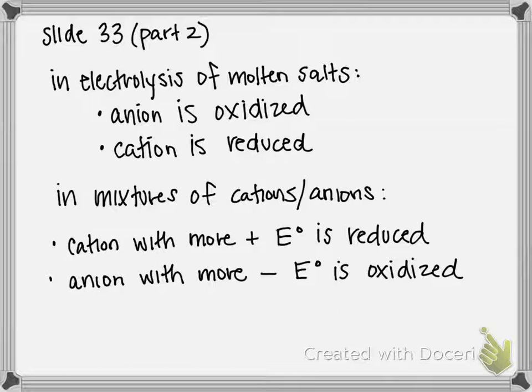Our question asks to predict the half-reaction occurring at the anode, also known as oxidation, and the half-reaction occurring at the cathode, also known as reduction, for electrolysis. There are two different reactions to consider.